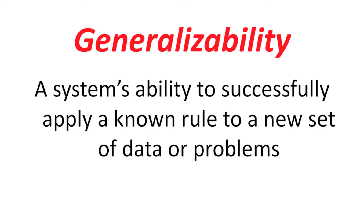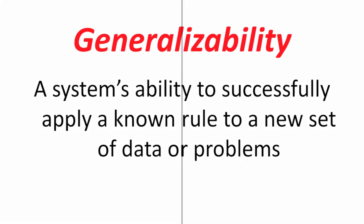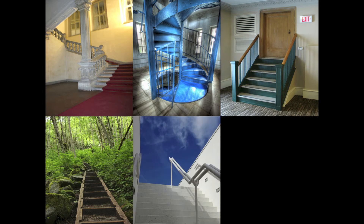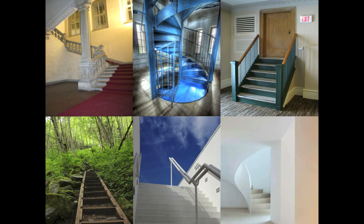The second feature scientists look for, generalizability, means that the system should be able to extrapolate the underlying rule it has learned once it is successful, so that it can apply the rule to data or problems which it has not necessarily encountered yet. It would not be very useful if you had to relearn how to climb the stairs every time you came across a new set of steps, and a system which could not generalize its learning in this way is not behaving intelligently.